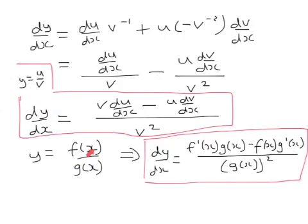Basically, if you've got one thing divided by another, when you differentiate it: differentiate the top one first, leave the bottom one alone, then differentiate the bottom one second, leave the top one alone. The order is important because of the minus sign — if you get this wrong, it will almost certainly be because you've done it in the wrong order. The rule is: differentiate the top one first. The u becomes du by dx — that's first.